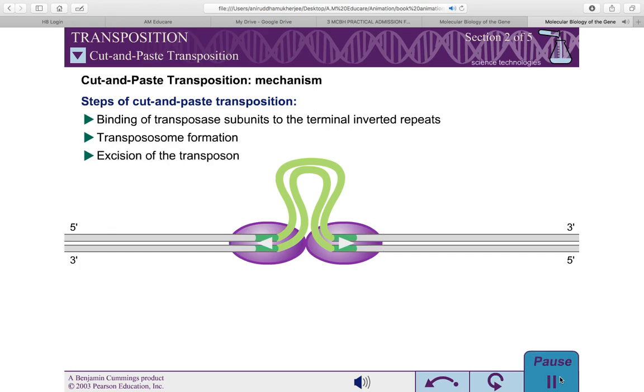Next, the transposon is excised from its initial location in the genome. To accomplish this, each of the transposase subunits makes one DNA strand, such that the transposon sequence terminates with free 3' hydroxyl groups at each end.